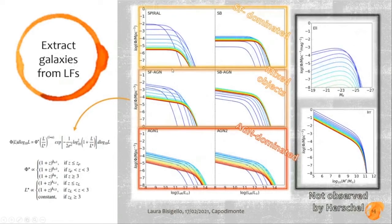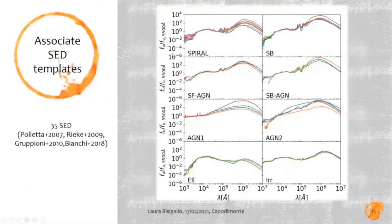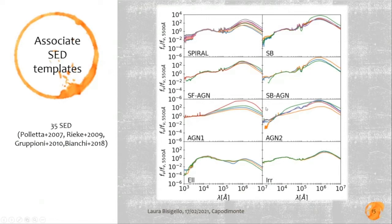The luminosity functions are used to derive the expected number of galaxies for each population depending on infrared luminosity and redshift. To the simulated galaxies for the IRAS/Herschel populations — spirals, starbursts, and AGNs — we associate the same templates used to derive the infrared luminosity function for consistency, mainly from Polletta et al. We also use Polletta et al. templates for ellipticals, and for irregular galaxies, since there are no templates in that work, we use templates from Bianchi et al.